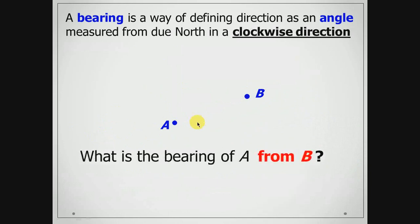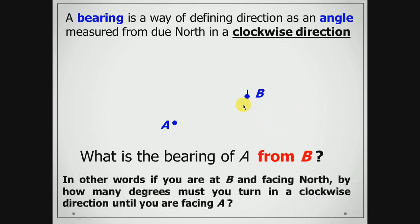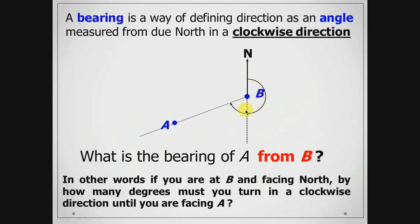Now this time we want to find the bearing of A from B. So our north line this time will be extended from B. Again, we go in a clockwise direction. So this angle mark here will actually be the bearing of A from B.